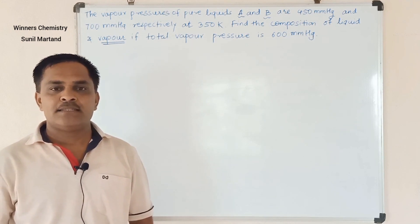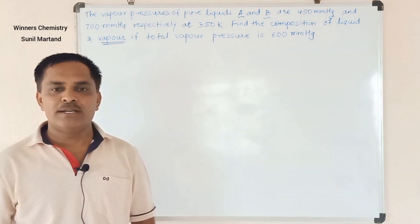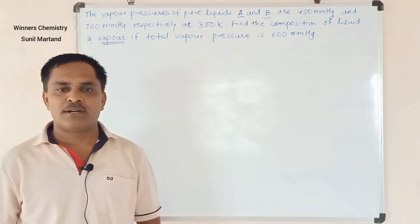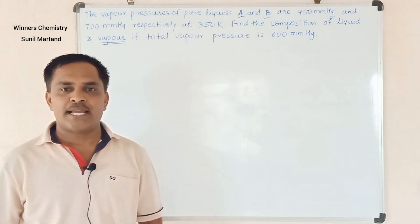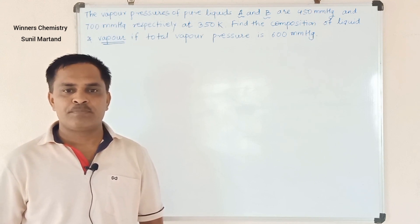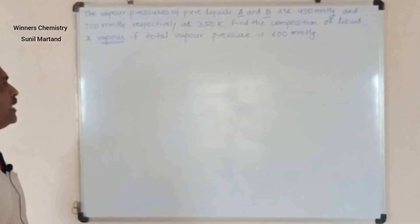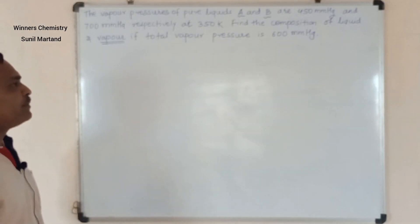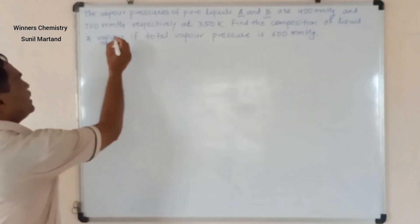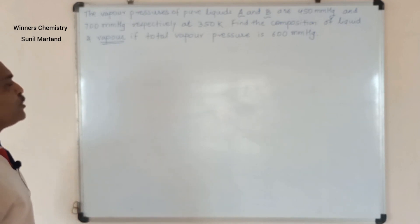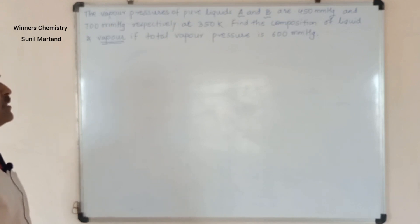We will solve a problem using a mathematical expression. The vapour pressure of pure liquids A and B are 450 mmHg and 700 mmHg respectively, at 350 K. Find the composition of liquid and vapour if the total vapour pressure is 600 mmHg.